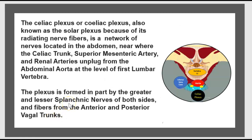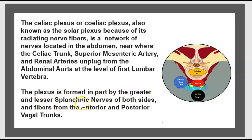The celiac plexus, also known as the solar plexus, is a network of nerves located in the abdomen. Because of its radiating nerve fibers, it is located near where the celiac trunk, superior mesenteric artery, and renal artery branch from the abdominal aorta at the level of the first lumbar vertebra. The plexus is formed in part by the greater and lesser splanchnic nerves of both sides, and fibers from the anterior and posterior vagal trunk.